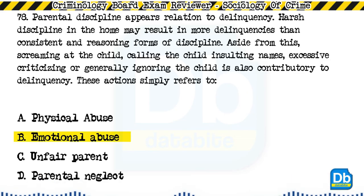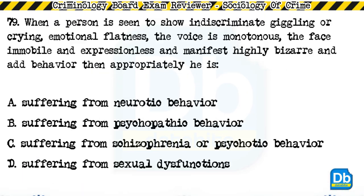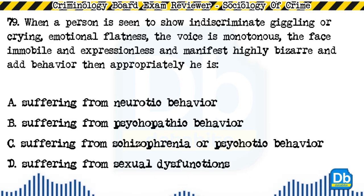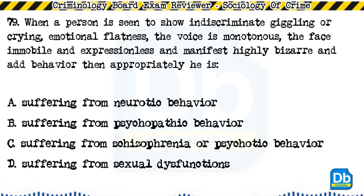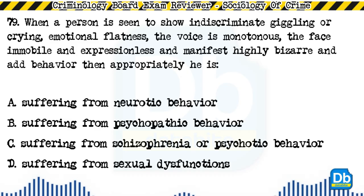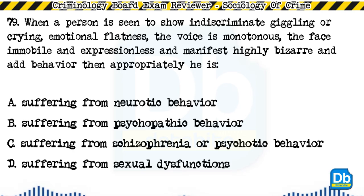Question 79: When a person shows indiscriminate giggling or crying, emotional flatness, a monotonous voice, an immobile and expressionless face, and manifests highly bizarre and odd behavior, then appropriately he is: a) suffering from neurotic behavior, b) suffering from psychopathic behavior, c) suffering from schizophrenia or psychotic behavior, d) suffering from sexual dysfunctions. The answer is C, suffering from schizophrenia or psychotic behavior.